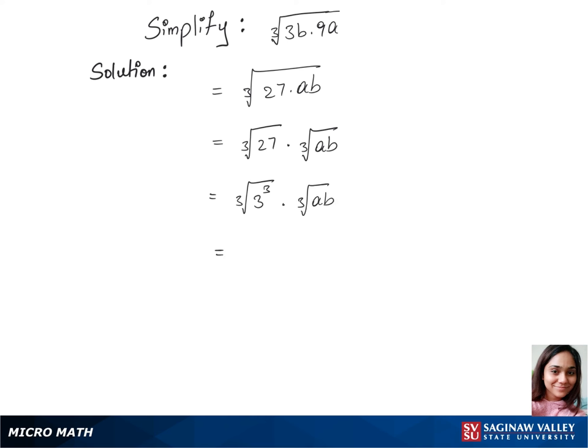In our next step, let's cross out cubic root and cube, so that way we get 3 times cubic root of AB. This is our final answer.